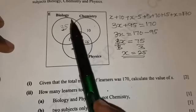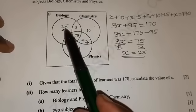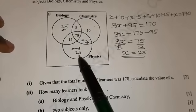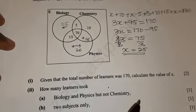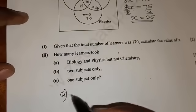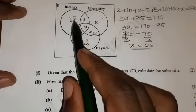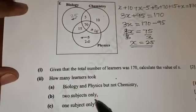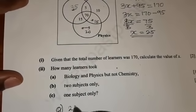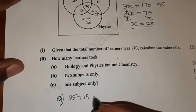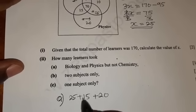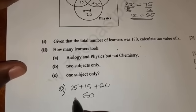So we are just going to add, which means we are going to add 25 plus 15 plus 20. So 25 plus 15 plus 20, and this gives 60.